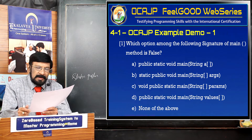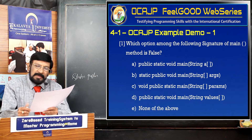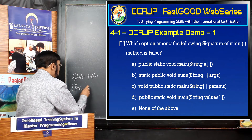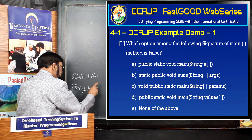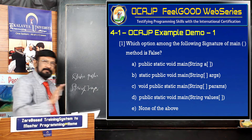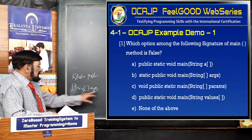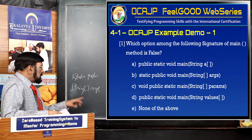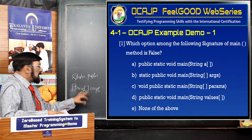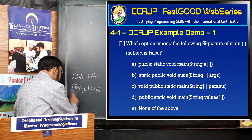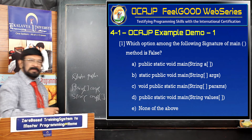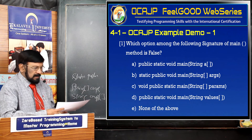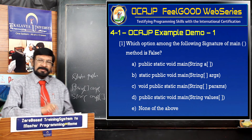Option D: public, static, void, main, String values[]. Any name is fine for the identifier. Now one very important point: the square brackets — whether to write 'String[] args' or 'String args[]'. Technically, you can place them either way. But the right one is 'String[] args', where 'args' is the identifier of an array of strings. Writing 'String args[]' is C-style. So C is confirmed false, and D is correct.